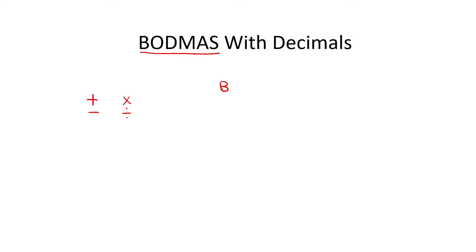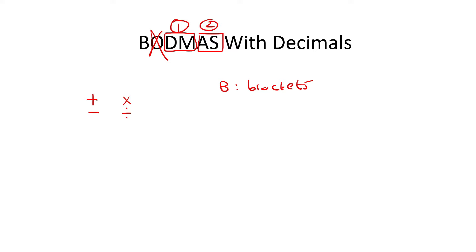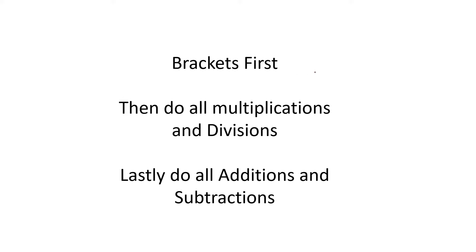Remember that the B stands for brackets. We're not really going to look at O in this type of section. Then remember that D and M is division and multiplication. They go together — one is not more important than the other. And then addition and subtraction, they also go together, but they are not as strong as division and multiplication. So you'll always do division and multiplication first, then addition and subtraction. Do it in that order: brackets first, then all multiplication and division, then all addition and subtraction.